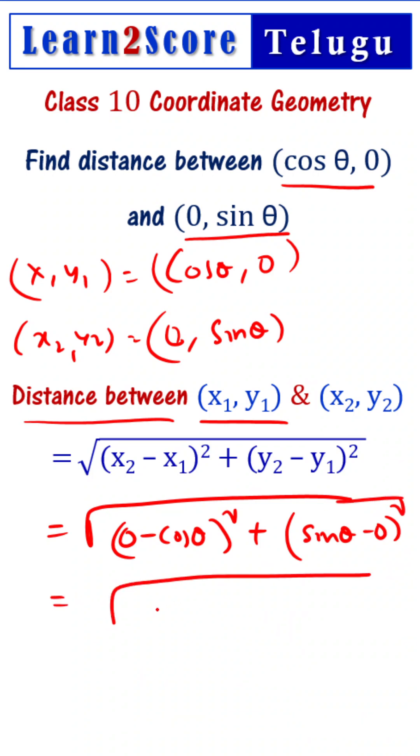This can be written as square root of cos²θ plus sin²θ. Since cos²θ plus sin²θ equals 1, this is equal to square root of 1, which equals 1. So the distance between these two points is 1.